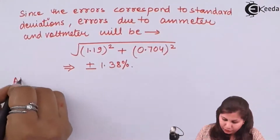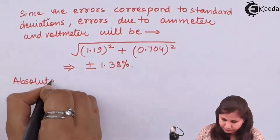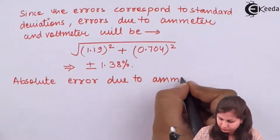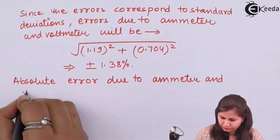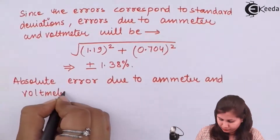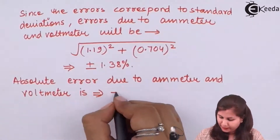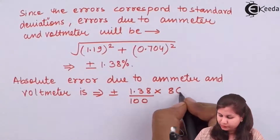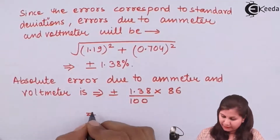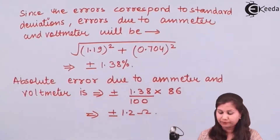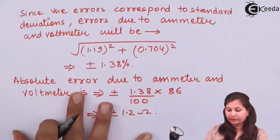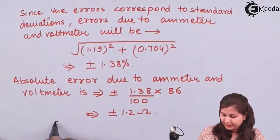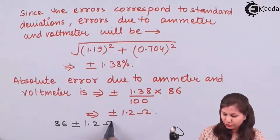The absolute error due to ammeter and voltmeter is plus minus 1.38 percent of the true value, which is 86 ohms, coming out to be plus minus 1.2 ohms. So we can write our result as: the resistance is 86 plus minus 1.2 ohms.